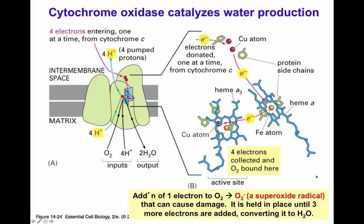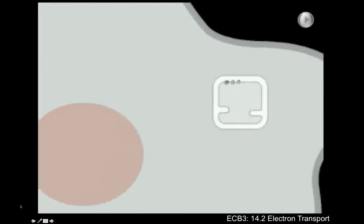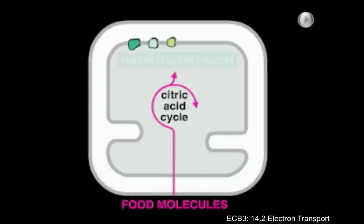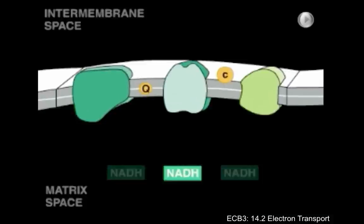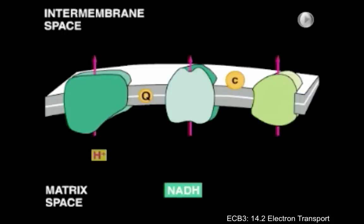The mitochondrion is the site of most of the cell's energy production. After food molecules are processed in the cytosol, they enter the mitochondrion where they are further broken down. In the citric acid cycle, the molecules are stripped of high-energy electrons, which are donated to carrier molecules such as NADH. The carrier molecules transfer the high-energy electrons to the electron transport chain, embedded in the inner mitochondrial membrane. The chain acts as a pump, using the energy of the electrons to move protons from one side of the membrane to the other.